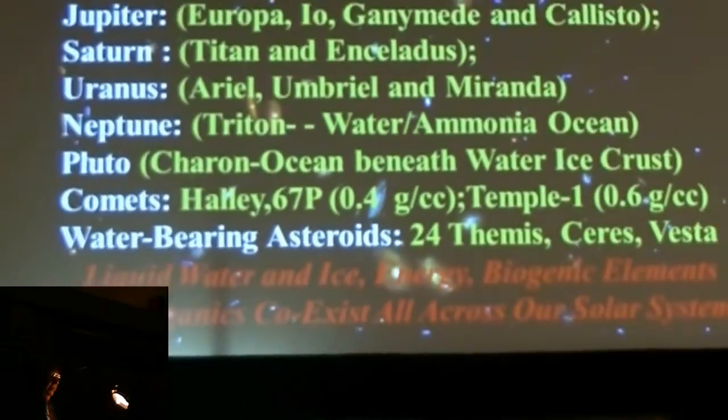Water has been found on all planets in our solar system and on moons, on comets — it is the dominant volatile — and it has also been found on water-bearing asteroids.